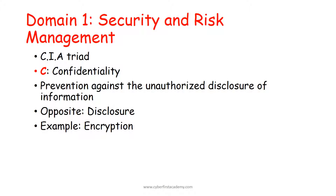The C in the CIA triad stands for confidentiality. Confidentiality has to do with privacy — keeping secrets secret. It is basically the prevention against the unauthorized disclosure of information. For example, putting encryption on a file or email serves as confidentiality.